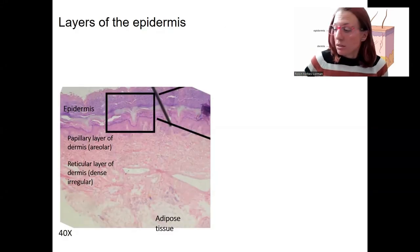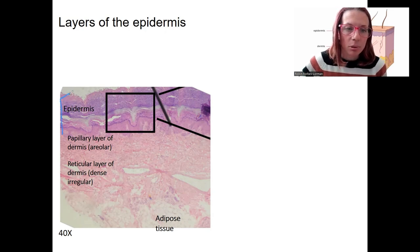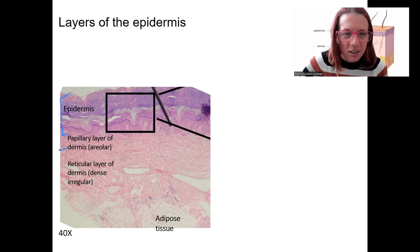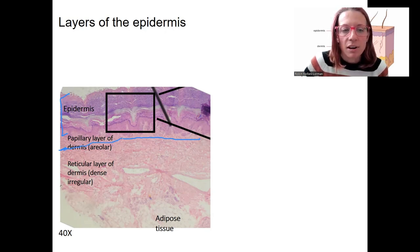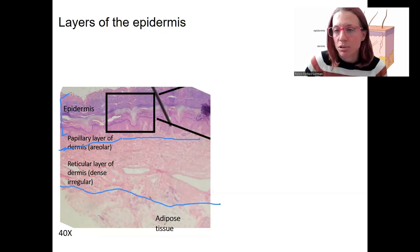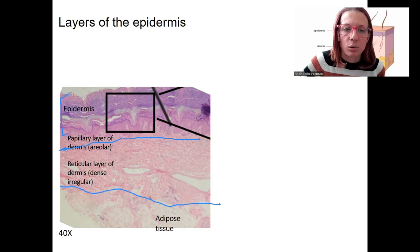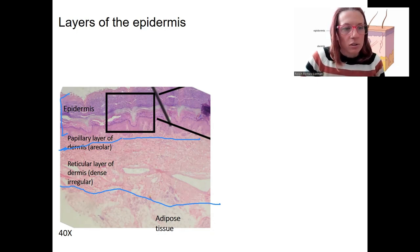You've seen these layers of the skin before: the epidermis is this entire purple piece all the way down. We've got our papillary layer of the dermis, and then our reticular dermis below that — that dense irregular tissue. Below that, our hypodermis is made of adipose tissue. We're going to zoom in to these layers of the epidermis, kind of this square right here.